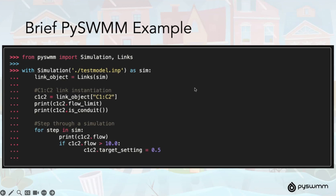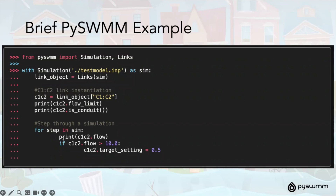Here's a brief example of what this looks like in practice. You have your standard imports, your simulation and your links. We've put the simulation behind a width context manager, and we create a handle to the simulation — this manages opening and closing the simulation when you exit the width block. We instantiate a links object and pass our simulation handle to it. From there we can grab a link ID, set it to a variable, and get various parameters out — like a flow limit or whether it's asserted as a conduit. When we enter the for-step-in-sim section, we've started our simulation and we're stepping through it. We can print the flow rate, check it against a condition, and alter a target setting for a pump.